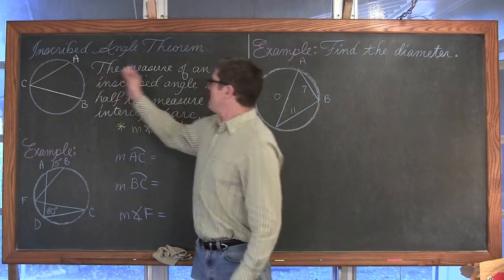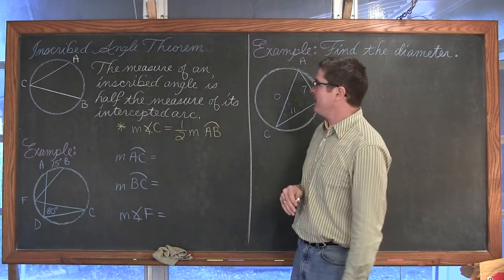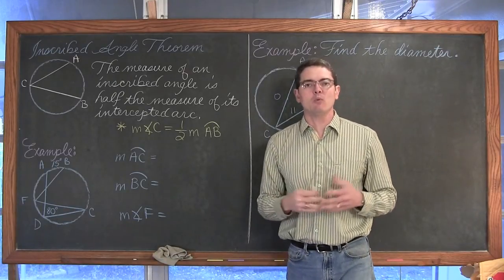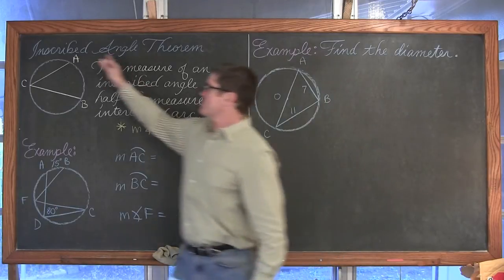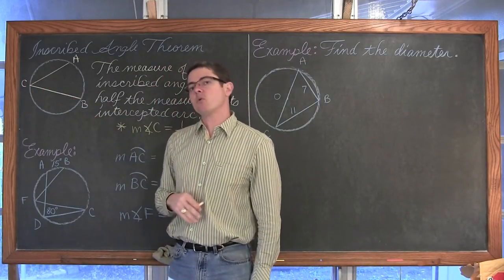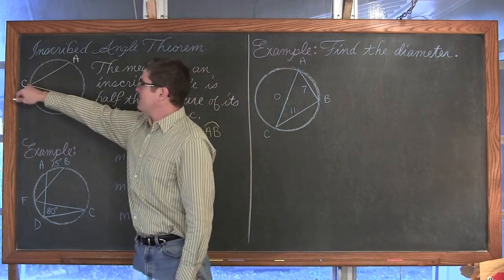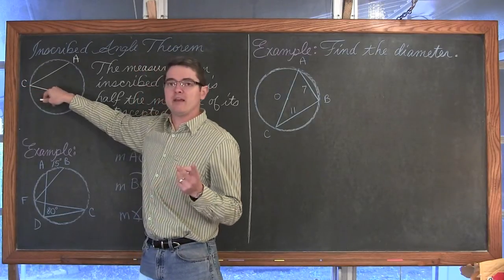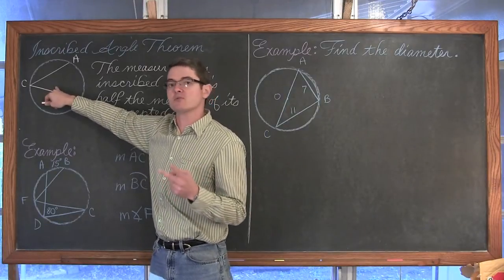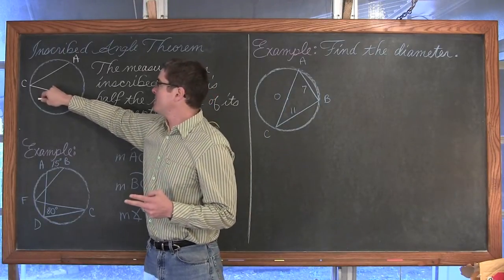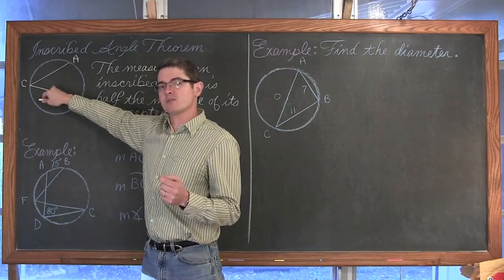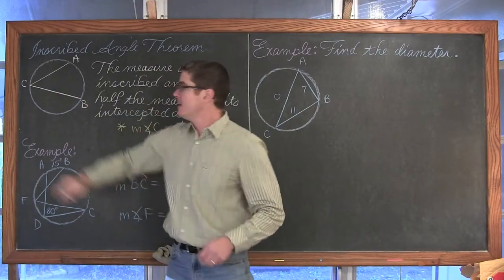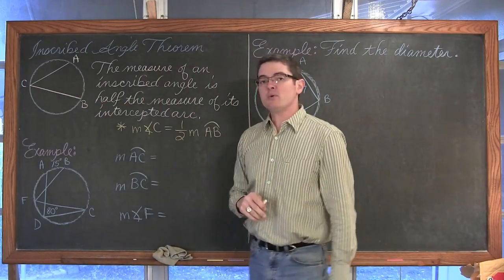So we have a circle here. The measure of an inscribed angle is half of the measure of the intercepted arc. An inscribed angle is simply made up of two chords in a circle and the vertex of that angle must be on the circle itself. There are two types of angles we deal with in circles: central angles, where the vertex is the center of the circle and the measure equals the arc, and inscribed angles, where the measure equals half of the arc.